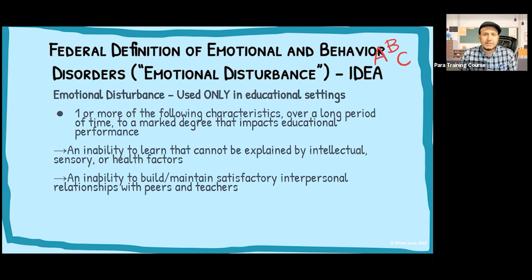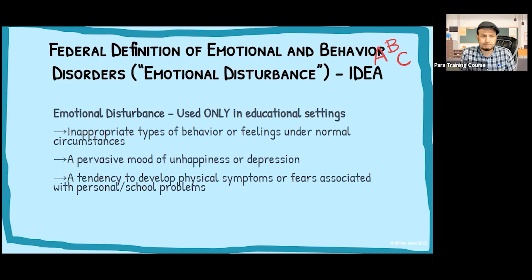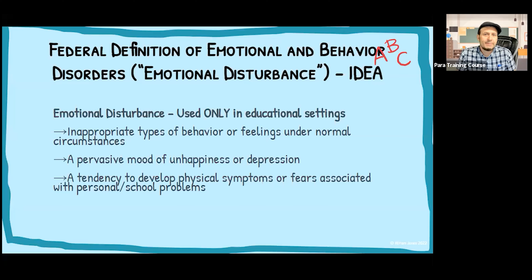Another characteristic is an inability to build and maintain satisfactory interpersonal relationships with peers and teachers. It's worth drawing attention to the word 'satisfactory' here — satisfactory to whom? Probably to the student: is the student self-reporting that they do or do not have satisfactory interpersonal relationships? With this exceptionality also come inappropriate types of behavior or feelings under normal circumstances, as well as a pervasive mood of unhappiness or depression, and a tendency to develop physical symptoms or fears associated with personal or school problems.